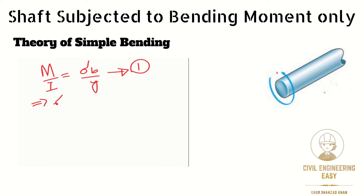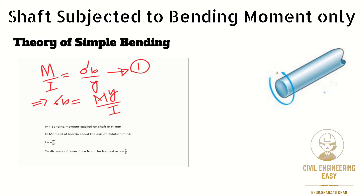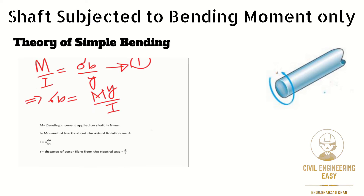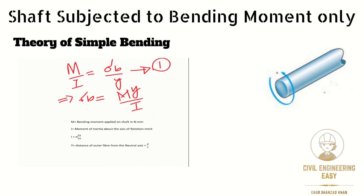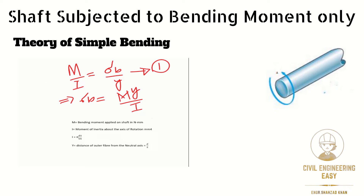The equation for maximum bending stress can be written as M/I = σ_B/Y, giving σ_B = MY/I, where M is the bending moment applied on the shaft measured in Newton-millimeters, I is the moment of inertia about the axis of rotation measured in mm⁴. For a solid circular shaft, the moment of inertia I = (π/64)D⁴, and Y is the distance of the outer fiber from the neutral axis, equal to D/2.